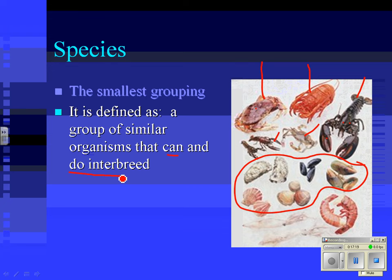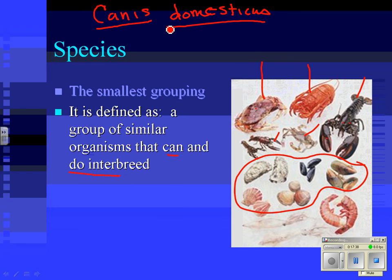A German Shepherd and a Great Dane, even though they look different, are in the same species — Canis domesticus, the domestic dog. They are in the same species because they can and do interbreed. Then you get a Great Shepherd or German Dane, which is kind of weird but it works. A species is a group of similar organisms that can and do interbreed — this is something we'll need to know later on.